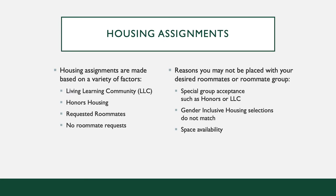Housing assignments are made based on a variety of factors. The priority order is as follows. Number one, living learning community, also known as LLC. If a student has been accepted into an LLC, the LLC designation will take priority over all other choices, such as honors housing or roommate requests. Number two, honors housing. If a student is a member of an eligible honors housing program, they will automatically be placed in honors housing, assuming they were not accepted into an LLC. If the student has roommate requests, we can only place those students together in honors housing if both students are also in honors housing.